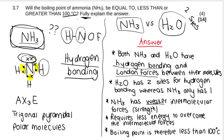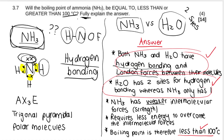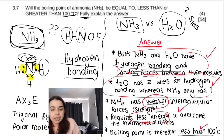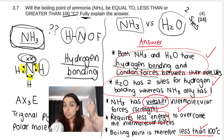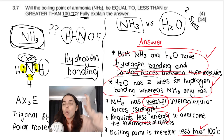So to summarise the answer recipe for these questions: state 'less than 100°C'; state the intermolecular forces present in both compounds; mention the number of hydrogen bonding sites or compare molecular size; compare the strength of the intermolecular forces; and then mention energy needed to overcome the forces. Always mention strength followed by energy — that's how you pick up all the marks.